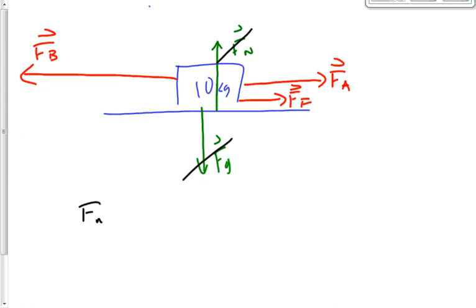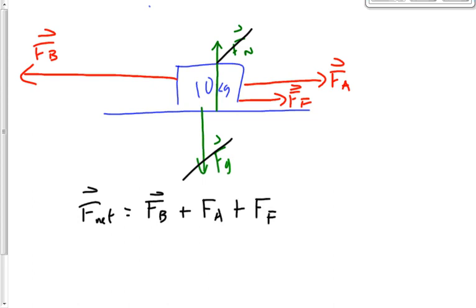At this point we say F-net. Net means the total, the sum. My net pay — yesterday was payday — my net pay was the amount I got, everything added together: gross pay, minus Canada pension, minus employment insurance, minus income tax. That gives my net salary. My net force is my total force: F-B plus F-A plus F-F. It doesn't matter what order you put those in.